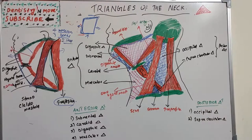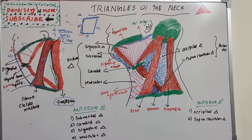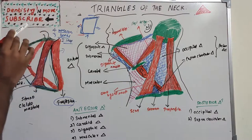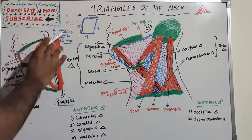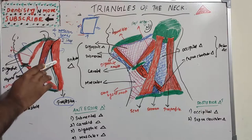Before moving on to the anterior and posterior triangles, we need to learn some anatomical landmarks and structures. This will make it easy to understand the boundaries of the individual triangles. We need to learn three bones, four muscles, and two imaginary lines.